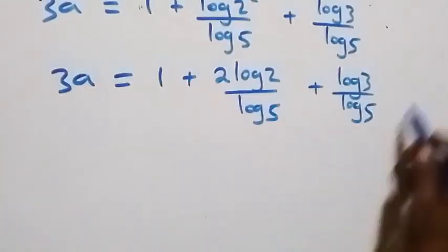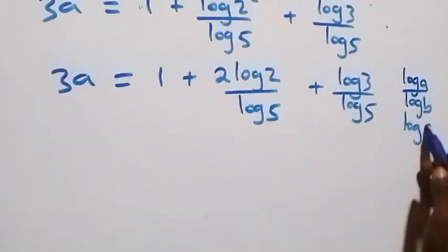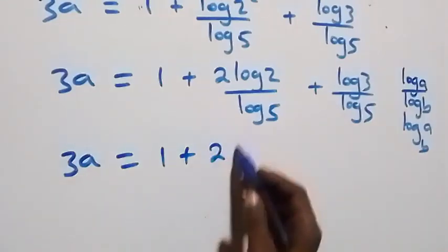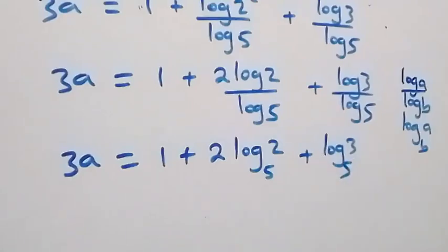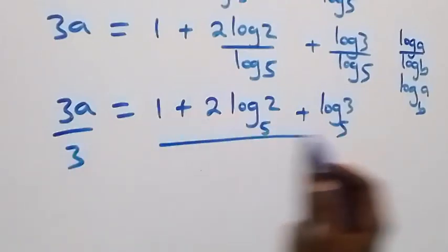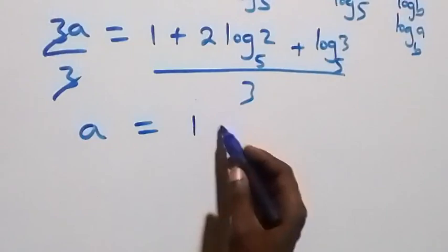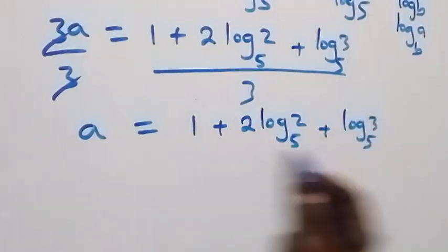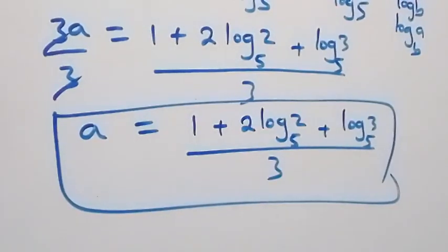Here we apply the change of base rule, where log a over log b can be written as log a to base b. So all we have becomes 3a equals 1 plus 2 log 2 base 5, plus log 3 base 5. From here, we divide both sides by 3, and 3 cancels, leaving us with a equals 1 plus 2 log 2 base 5 plus log 3 base 5, all over 3. This is the value of a.